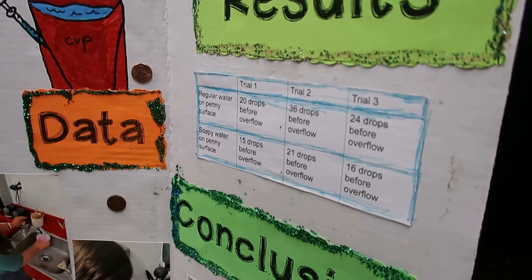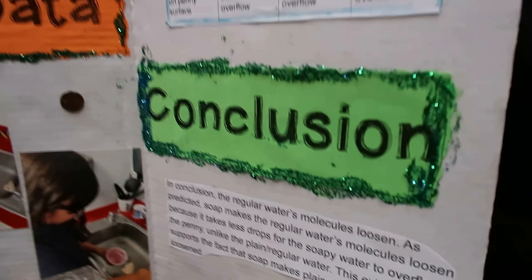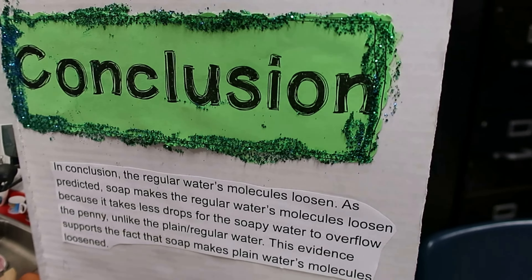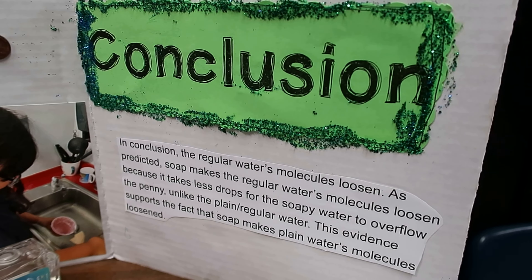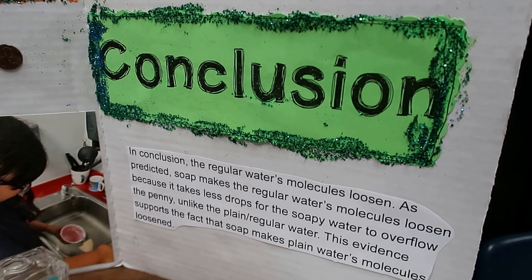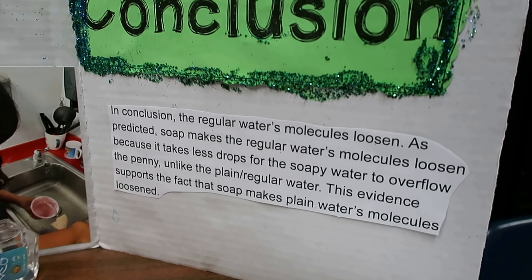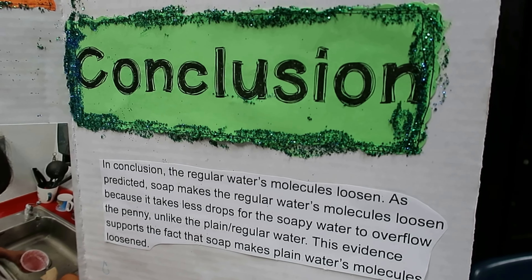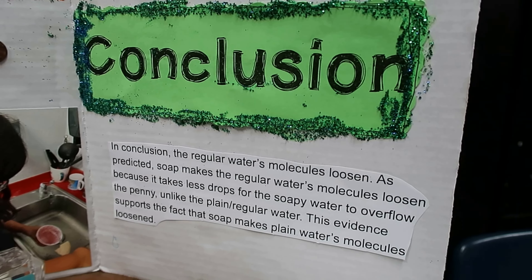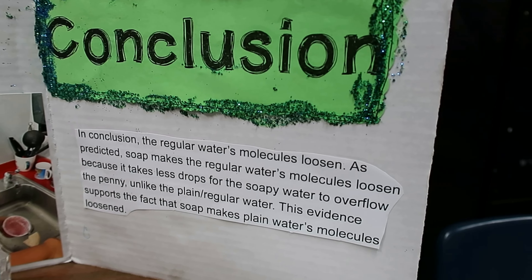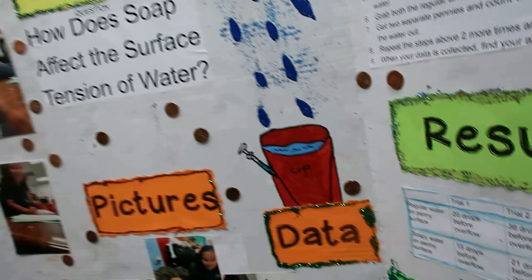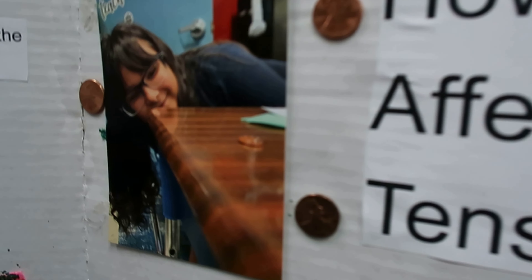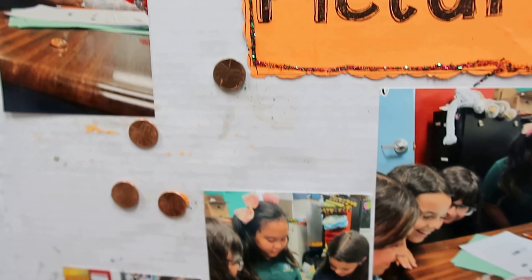This is the procedure. Step 1: Create a graph in your science or lab notebook. Step 2: Fill two cups or glasses with water. Step 3: Pour a few drops of soap into one glass of water. Step 4: Put one syringe in the regular water and another syringe in the soapy water.